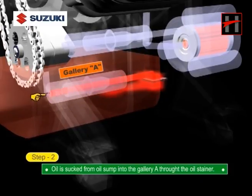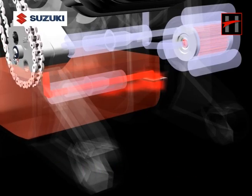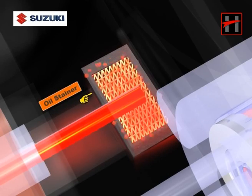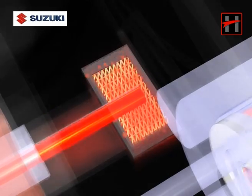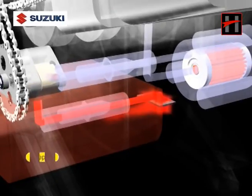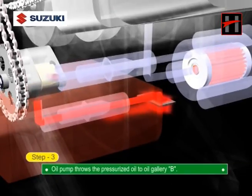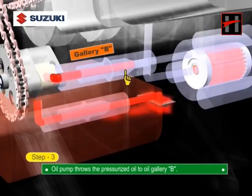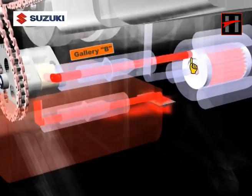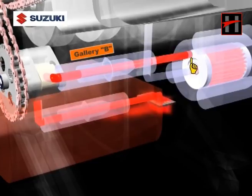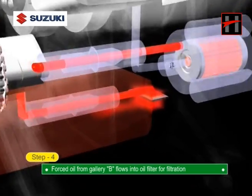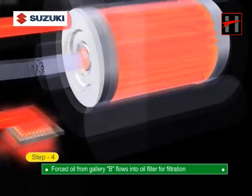Step 3: The oil pump throws the pressurized oil to gallery B provided in the left and right crankcase. Step 4: The forced oil from gallery B then flows into the oil filter for filtration.